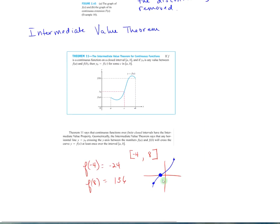The intermediate value theorem. If f is a continuous function on a closed interval from a to b, and if y sub 0 is any value between f of a and f of b, let's see what we're talking about. Here's f of a right there. Here's f of b right here. y sub 0 is any value between there, so you pick that. Then, y sub 0 equals f of c for some c between a and b.